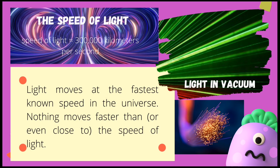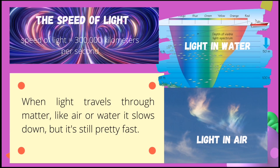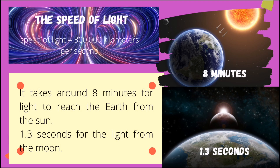How fast does light travel? Light moves at the fastest known speed in the universe — nothing moves faster than or even close to the speed of light. In a vacuum, light travels at 300,000 kilometers per second. When light travels through matter like air or water it slows down, but it's still very fast. The sun is almost 150 million kilometers from the earth; it takes around eight minutes for light to travel from the sun to the earth. It takes around 1.3 seconds for light to travel from the moon to the earth.